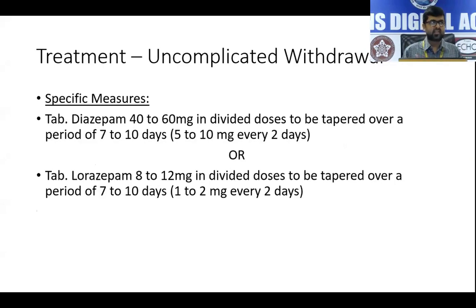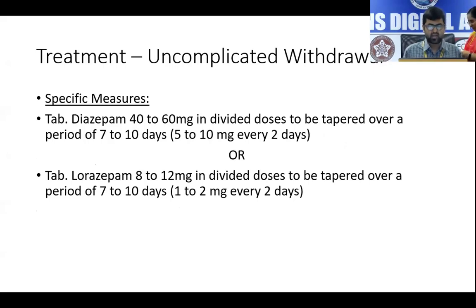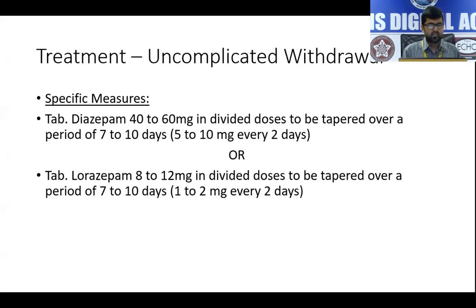The treatment of choice — as pointed out in the quiz — is benzodiazepines, most commonly diazepam or lorazepam. For uncomplicated withdrawal, diazepam can be given at 40 to 60 mg in divided doses, tapered over 7 to 10 days at around 5 to 10 mg every two days. If hepatic compromise is suspected, tablet lorazepam 8 to 12 mg in divided doses can be used. Lorazepam should be dosed QID initially, while diazepam can be dosed TID, then tapered similarly over 7 to 10 days.